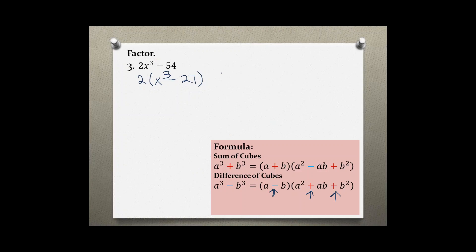Let's first determine our a and our b value. In this case, our a is x because the cube root of x³ is x, and our b is the cube root of 27, which is 3.